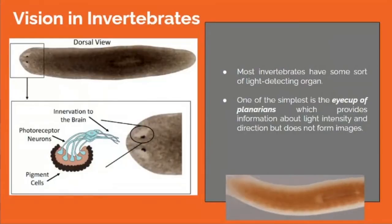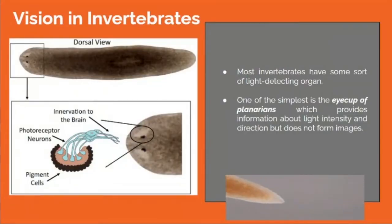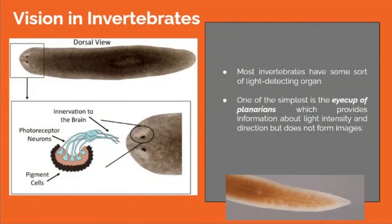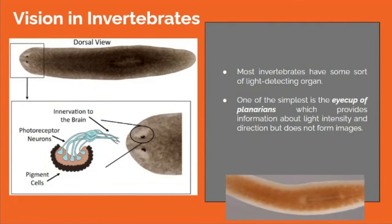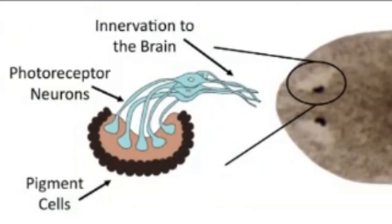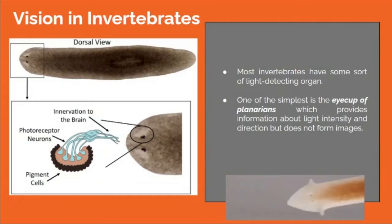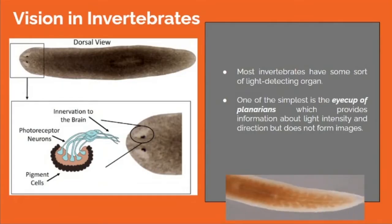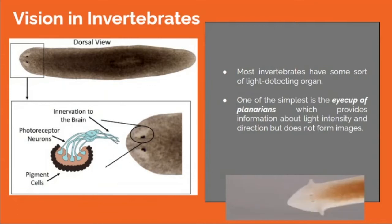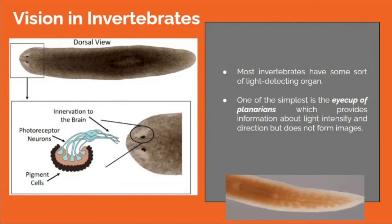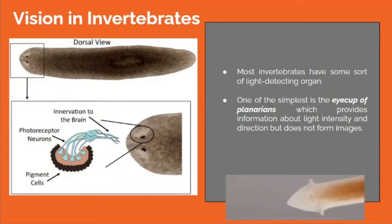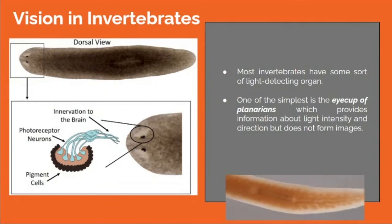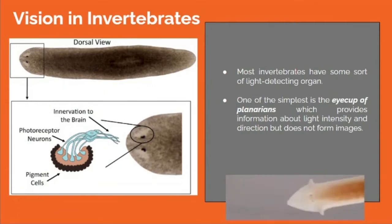Vision in invertebrates: most invertebrates have some sort of light-detecting organ. One of the simplest is the eye cup of planarians, which provides information about light intensity and direction but does not form images.